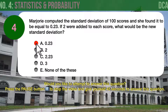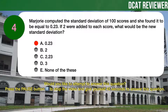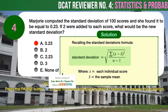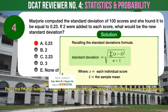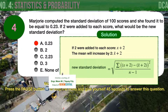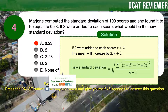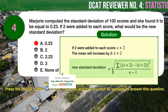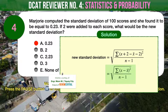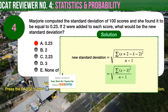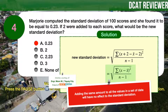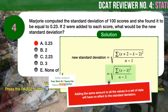The correct answer is A — the new standard deviation would be 0.23. Recall the standard deviation formula, where x represents each individual score and x-bar is the sample mean. If 2 were added to each score (expressed as x + 2), then the mean will likewise increase by 2 (expressed as x-bar + 2). Rewriting the new standard deviation formula and simplifying, we end up with the same original formula. Therefore, adding the same amount to all values in a data set has no effect on the standard deviation — the new standard deviation will still be 0.23.